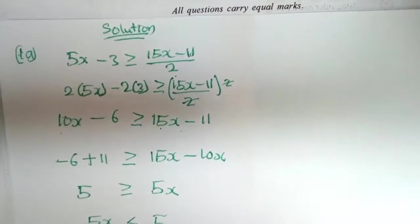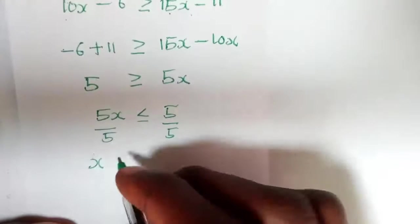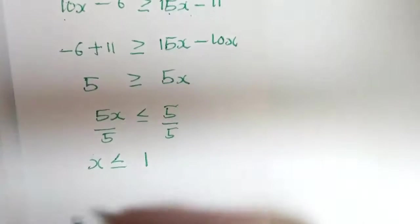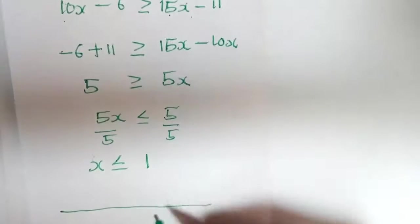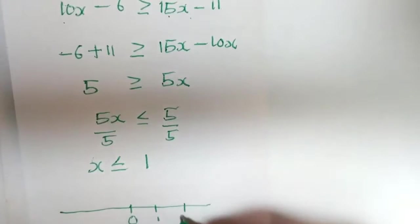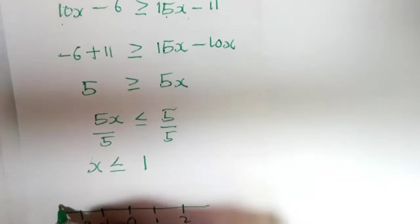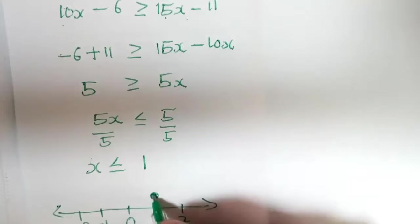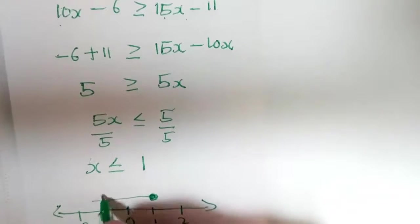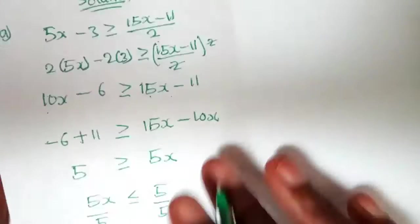Dividing both sides by 5, we obtain x is less than or equal to 1. To illustrate this on the number line: we mark 0 and 1, with negative 1 and negative 2 to the left. Because it's less than or equal to, we use a solid dot at 1 and the arrow moves to the left.